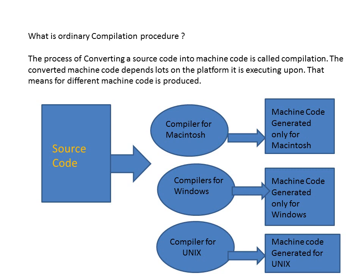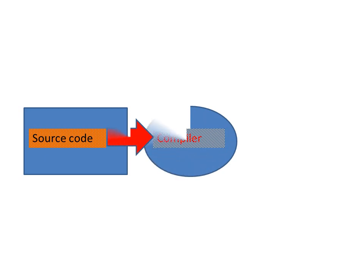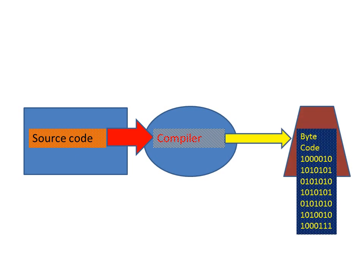Now we can see how Java is working. We write the source code and then the source code is compiled using the compiler, similar to the previous process. But after compilation, it doesn't create anything which is system dependent — it creates bytecode. The bytecode is very lightweight code. When we generate a bytecode in Java, it will be somewhere around 15K, 20K, or 25K even for a huge program, so it is very small in size. That is called bytecode.